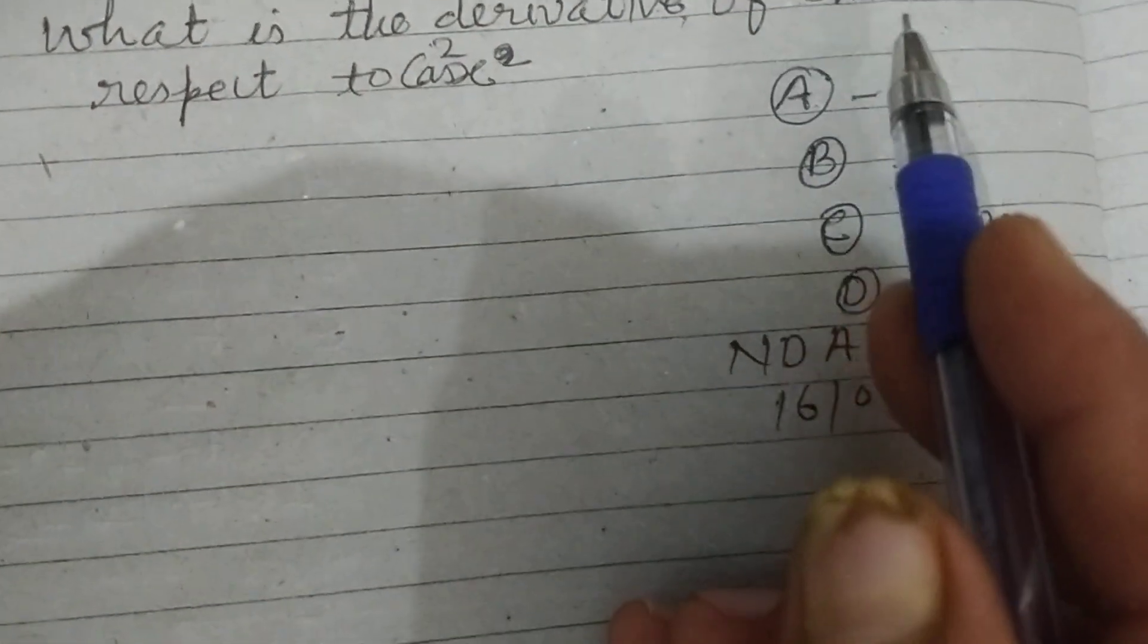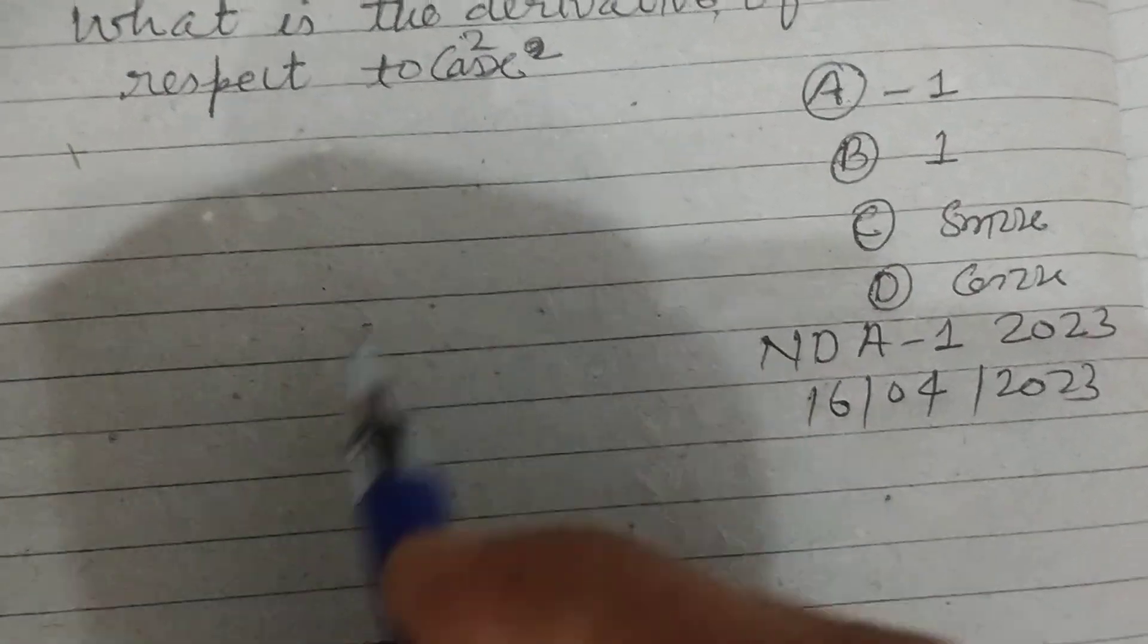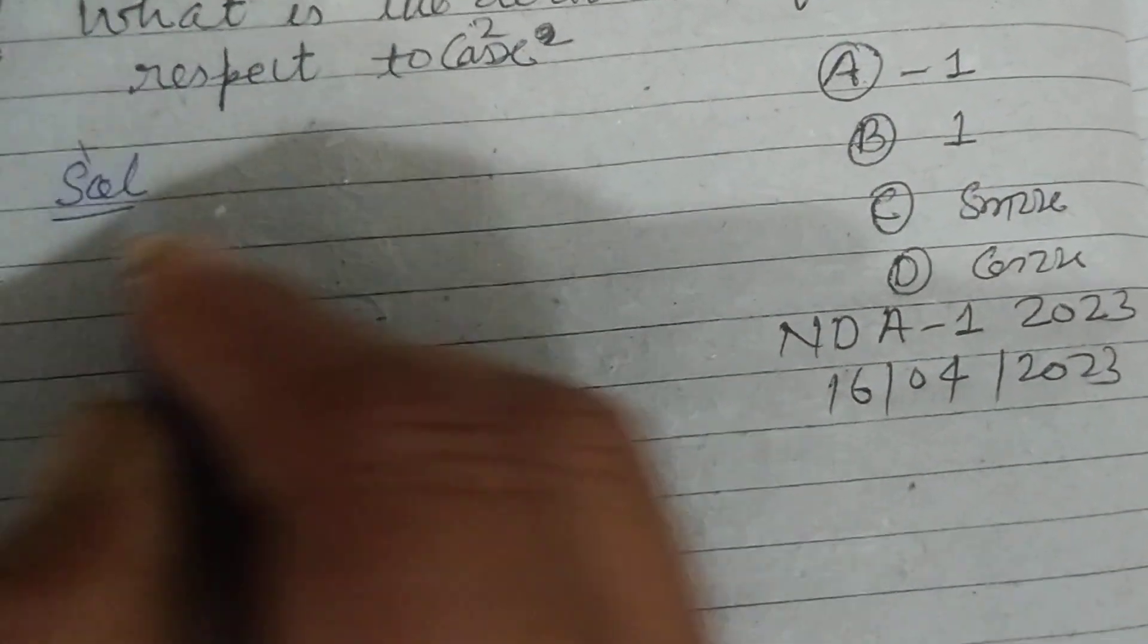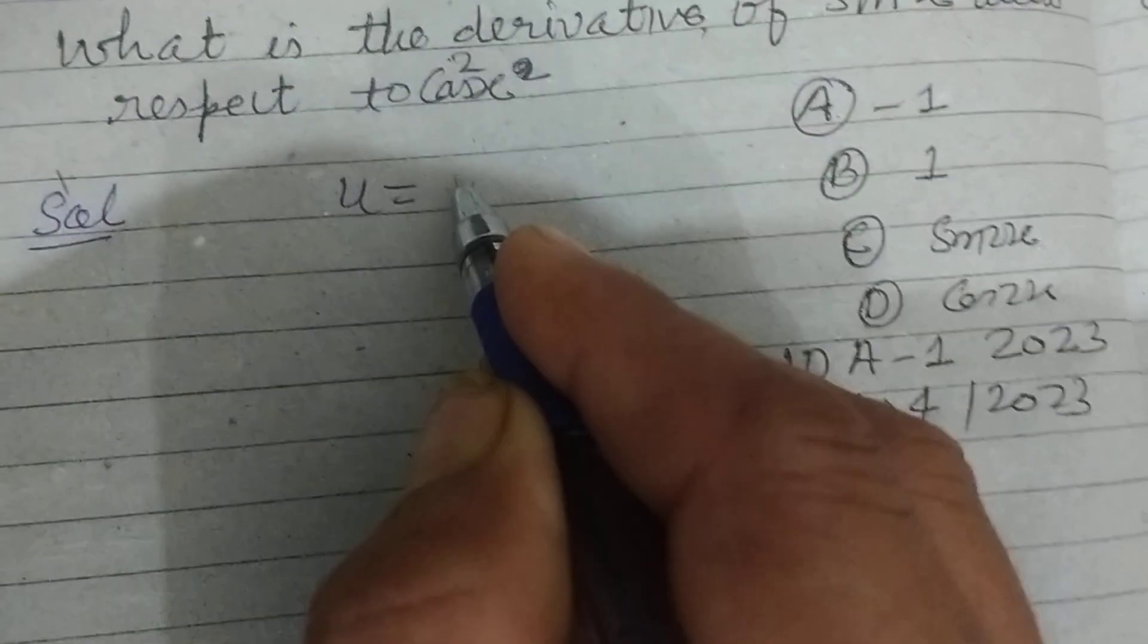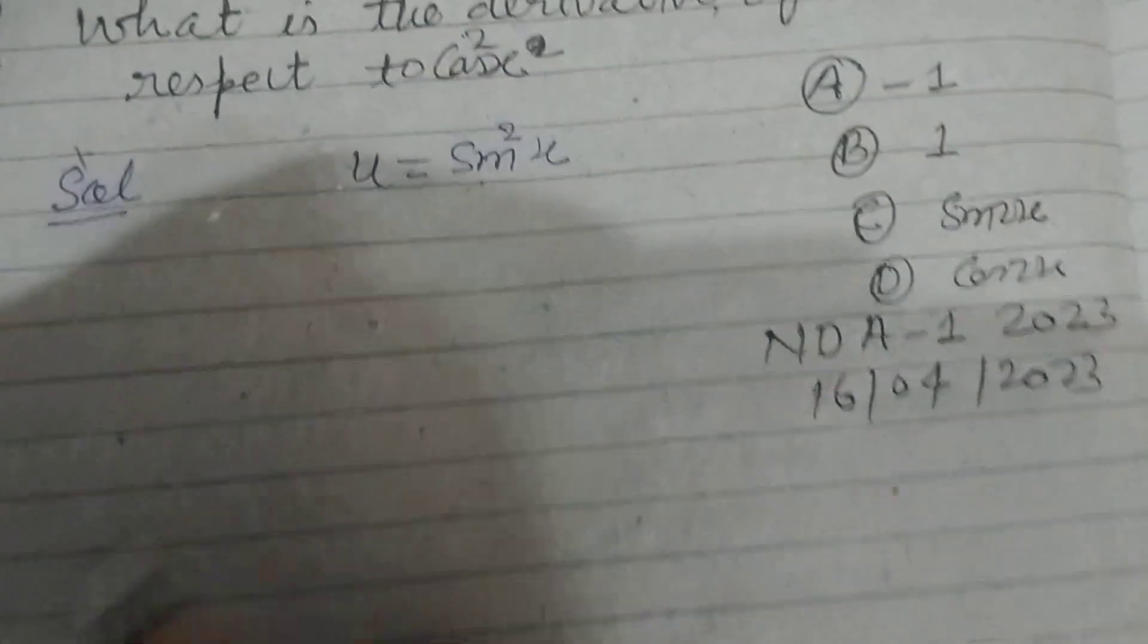What is the derivative of sin square x with respect to cos square x? So student, let u equal to sin square x.